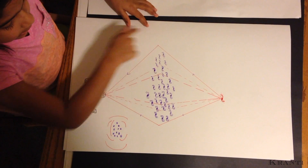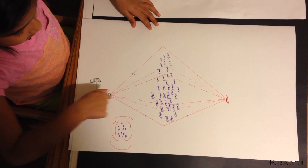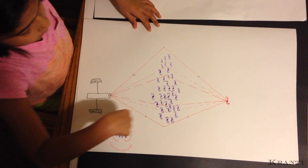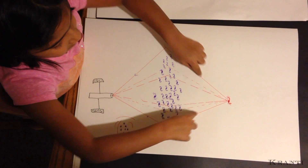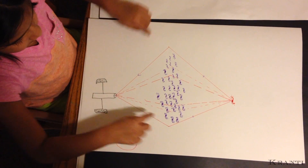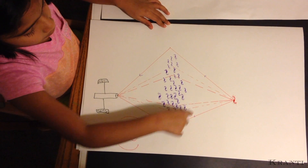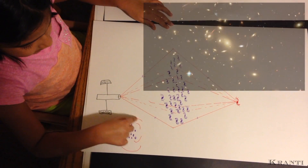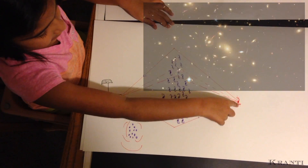When a galaxy cluster is between the telescope and a far galaxy, the light from the far galaxy is bent by the gravity of the cluster, and you will see many arcs of this galaxy.